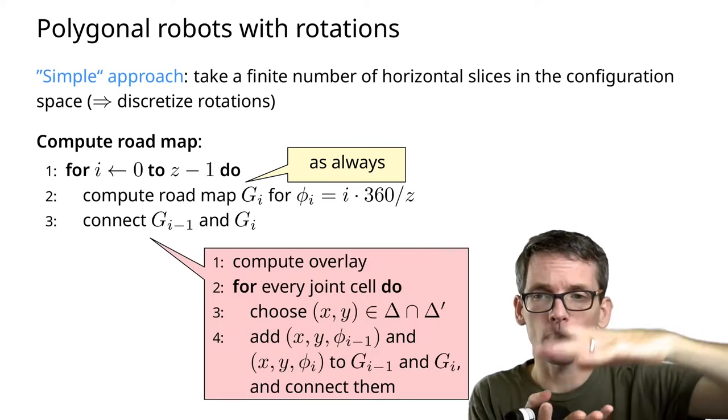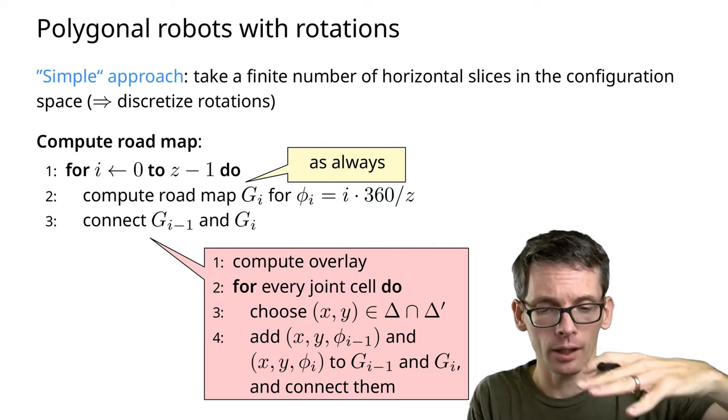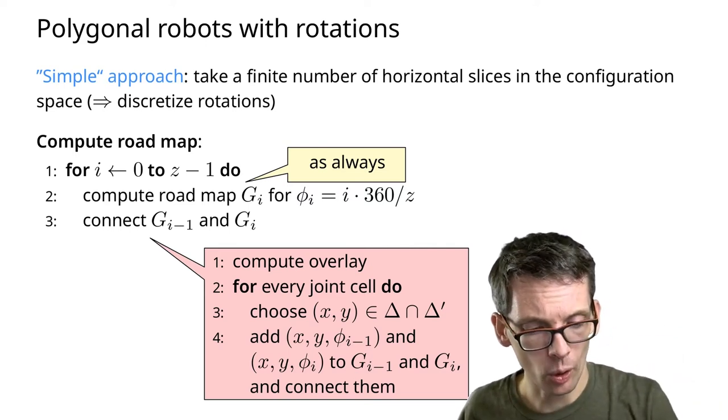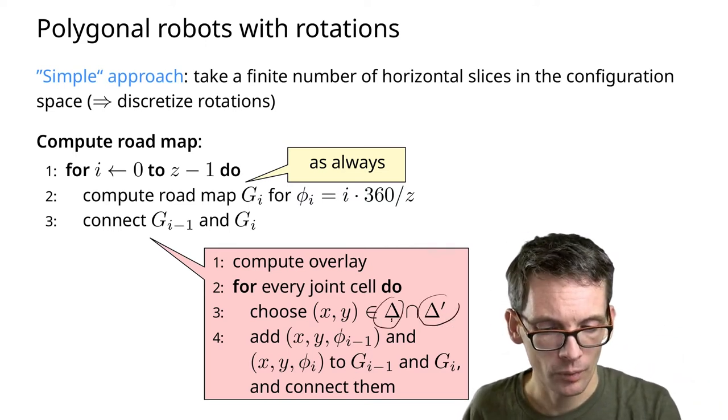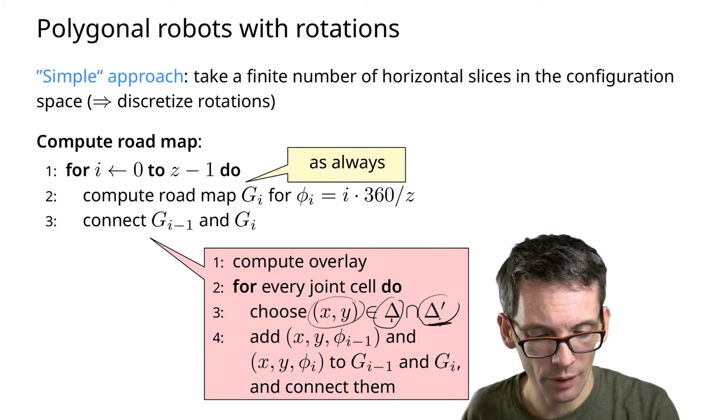To connect two slices, we're going to compute the overlay of the two slices and then every cell, for every joint cell, so a cell of Gi-1 and a cell of Gi.